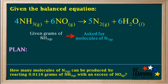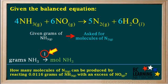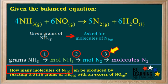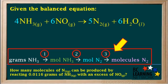Now we can create a plan. We're given the grams of NH3, so we start with that. Because we're asked for another substance, we must change grams of NH3 into moles of NH3. So that's what we do in step 1. In step 2, we convert moles of NH3 to moles of the substance we're asked for, N2. And in step 3, we convert moles of N2 to molecules of N2, which is what we're asked for. Now we have a complete plan for this problem.